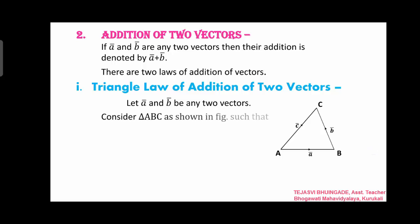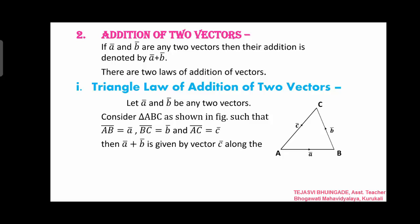Consider triangle ABC as shown in figure, such that AB̄ is equal to ā, BC̄ is equal to b̄, and AC̄ is equal to c̄. Then ā plus b̄ is given by vector c̄ along the third side of triangle ABC. Thus, ā + b̄ equals AB̄ + BC̄ equals AC̄, which equals c̄. In triangle law, the terminal point of the first vector is the initial point of the second vector, and the third side gives the resultant.